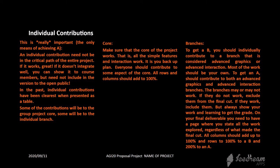If the branch works and you are able to merge it to the main core, that's better for everybody. In the past, individual contributions have been clearest when presented as a table. Some contributions will be to the group project core, some to the individual branch. Everybody should be contributing to the core. Everybody wanting a B should contribute to either advanced graphics or advanced interaction. Everybody aiming for an A should work towards both — a full contribution to advanced graphics and a full contribution to advanced interaction. Make sure the core works — that is your backup plan. All rows and columns should add up to 100%.